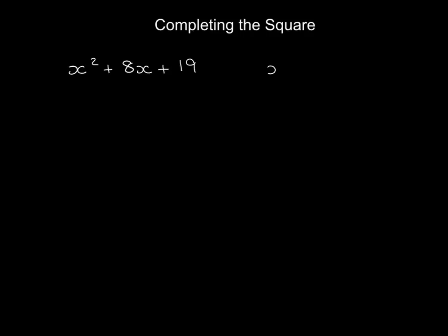And you want it written in a different form. You want it as a square bracket, which is x plus a squared plus something else. Let's say b. Now a and b are numbers.